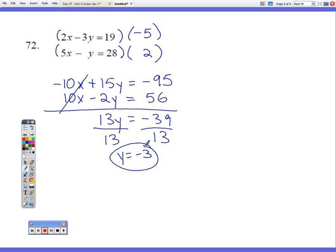I still need to find x, so I'm going to take my negative 3 and put it back into one of the equations. It doesn't matter which one, I'm just going to use the first. So we have 2x minus 3 times negative 3 equals 19. 2x plus 9 equals 19.